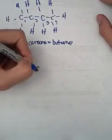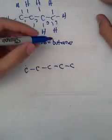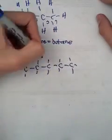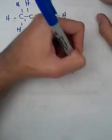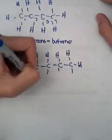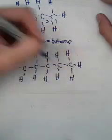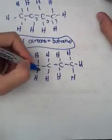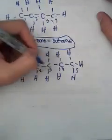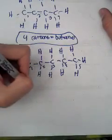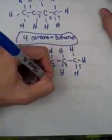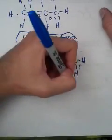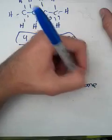Now let's draw the one for five carbons. This is something you want to make flashcards for, so you start learning these new names. You don't even have to draw the whole molecule — you can just write 'four carbons, butane' because you just count them. Alright, so now we have five carbons. What's the name for an alkane that has five carbons? The name for it is pentane.